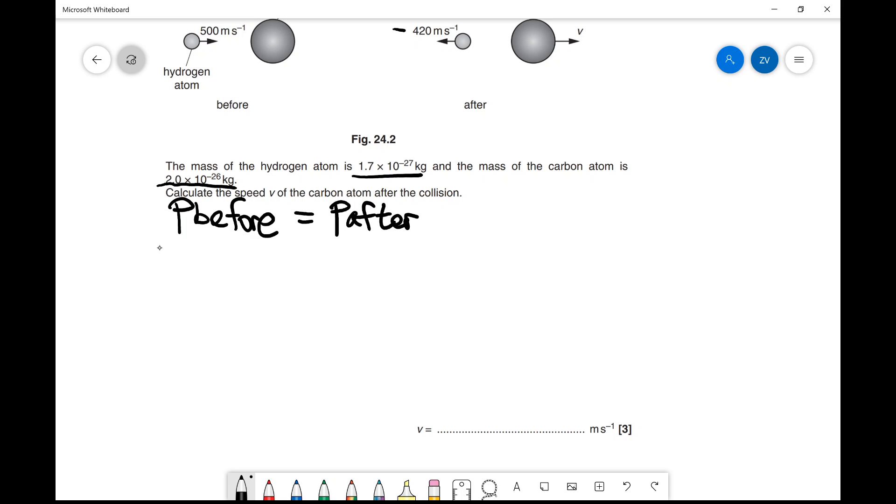we multiply the mass of the hydrogen atom, 1.7 × 10^-27, times 500 (the speed of the hydrogen atom). This equals the total momentum after.